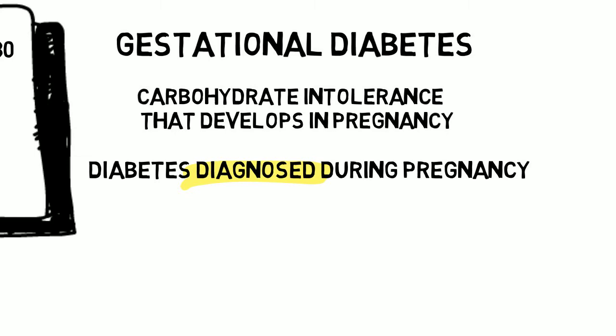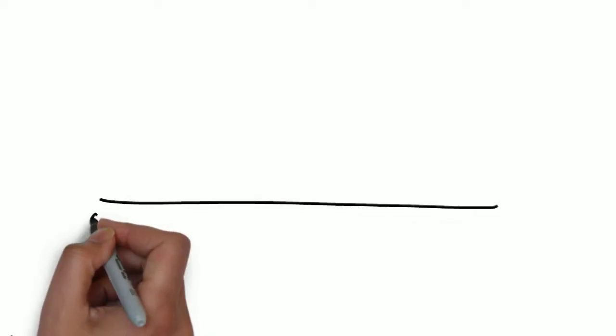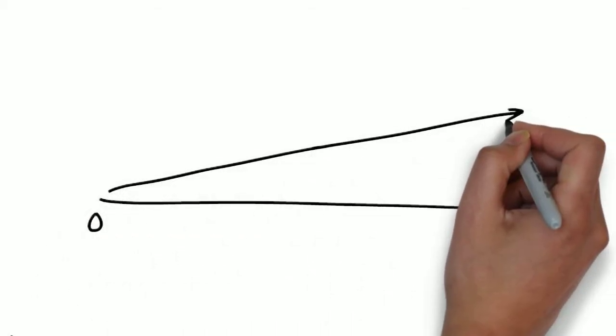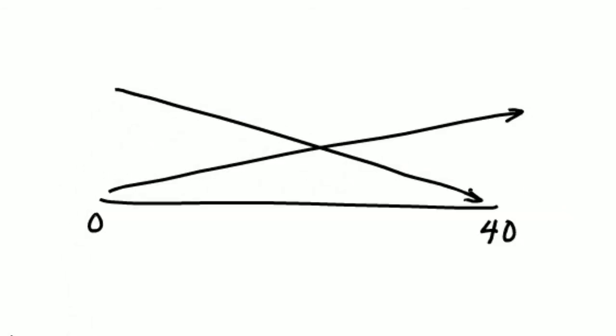But generally speaking, gestational diabetes is diabetes diagnosed during pregnancy. Most cases are diagnosed following a routine screening test at 24 to 28 weeks.